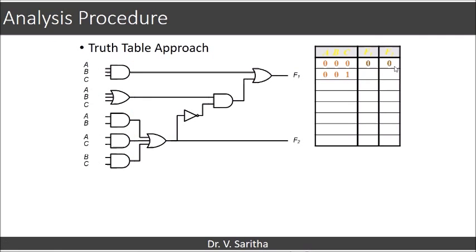Then, next combination, 0, 0, 1. Substitute the same values. Now, we can see that F1 is 1 and F2 is 0.